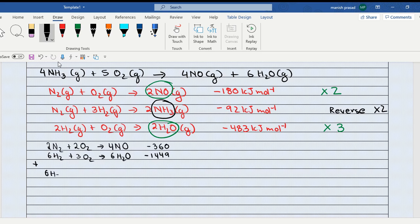Aag in dono ko add kar do. To aap ke paas kya aagya? 6 H2 plus 2 N2 plus 5 O2 giving us 4 NO plus 6 H2O. Dono negative me hai to add hi ho ga: 9, 6, 4, 10, 8, 1, 8, 0, 9.